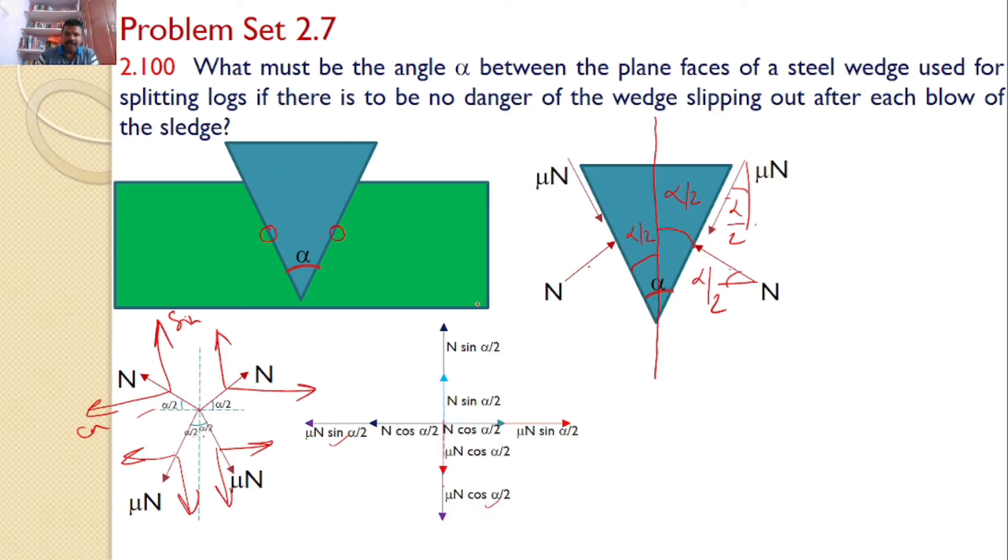Now in order to satisfy the equilibrium we must use the equation sigma Fx equals 0 and sigma Fy equals 0. So let us use the equation sigma Fy equals 0. There are two upward forces and two downward forces, and the net upward force N sin alpha by 2 plus N sin alpha by 2, that is 2N sin alpha by 2, and the net downward force is 2 mu N cos alpha by 2.